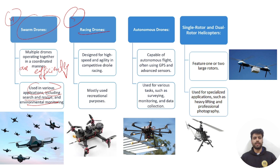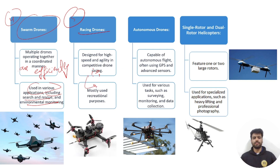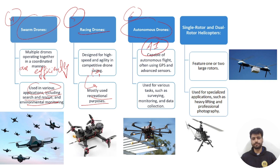The fifth type is racing drones, designed for high speed and agility in competitive drone racing. They have the ability to move quickly and are mostly used for recreational purposes. The sixth type is autonomous drones, which are capable of autonomous flight under the control of automatic systems like artificial intelligence, and are used for various tasks such as surveying, monitoring, and data collection.